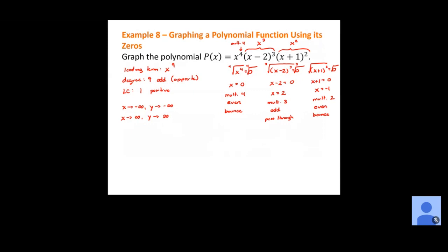Now we have everything we need to sketch the graph — this is a rough sketch. We can get all the x-intercepts on there, get our end behavior correct, and then we'll look at Desmos to see how close we were. I'm going to graph my x-intercepts: one at zero (the origin), one at positive two, and one at negative one. My end behavior goes down to the left and up to the right.